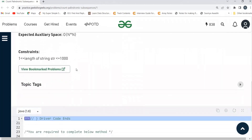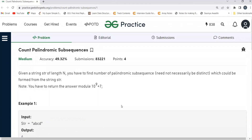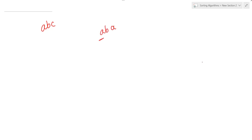The expected time complexity and space complexity have been mentioned. Now let's understand how we can solve this problem. For a string, there are two possibilities when checking if it's a palindrome. We compare the first element and the last one — if they are the same, we proceed further. For 'abcba', we compare the outermost characters, then increment i and decrement j. When i and j become equal, we conclude it's a palindrome.